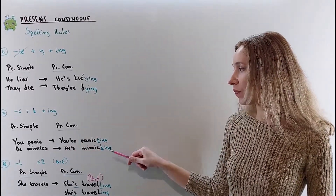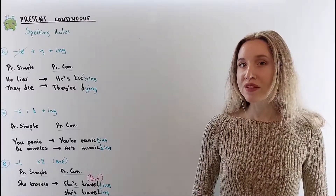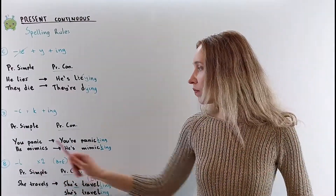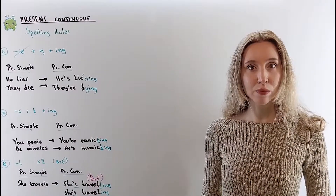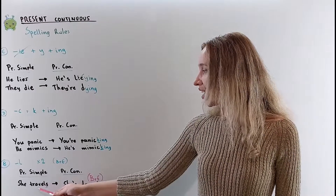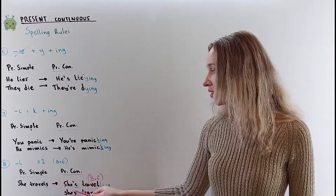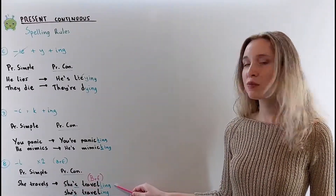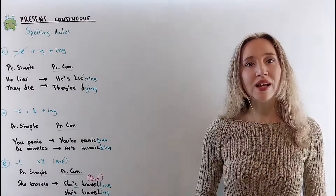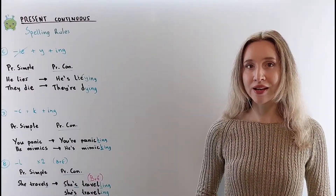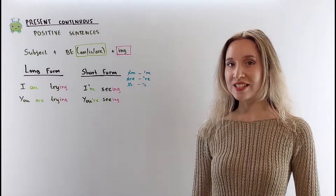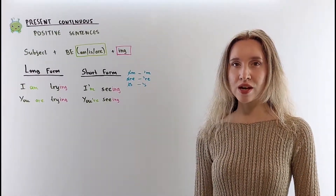When the verb ends in vowel plus L, you can double the L in British English. She travels → she is travelling (British English), or she is traveling — one L in American English.